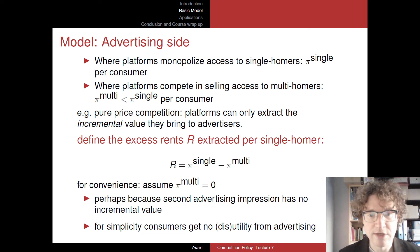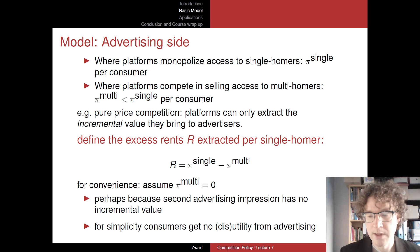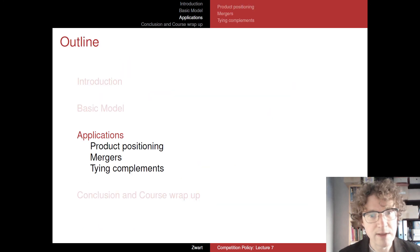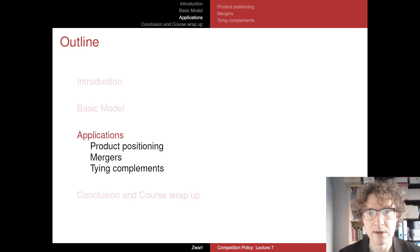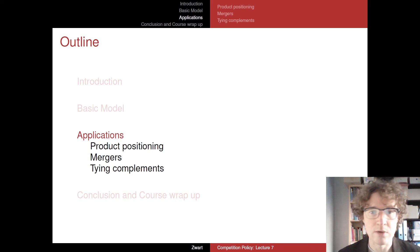We additionally assume for simplicity that consumers get no disutility from advertising — they don't mind having advertising on the website they're visiting. This can be relaxed, but it wouldn't offer much further insight for this particular analysis. So that's the model we're going to use: firms can produce either independent goods or substitute goods; we have these consumers and the right of access to them that can be sold to advertisers, either extracting monopoly rents from single-homers or, when consumers are multi-homing, no additional advertising rents.